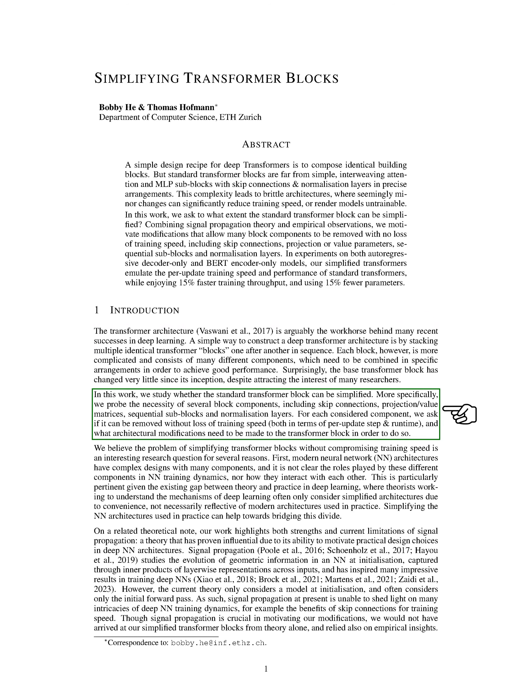In this study, we're going to explore if we can simplify the standard transformer block. We're going to examine the necessity of several block components, such as skip connections, projection, value matrices, sequential sub-blocks, and normalization layers. We'll question if these components can be removed without slowing down the training process, and what changes need to be made to the transformer block to achieve this.